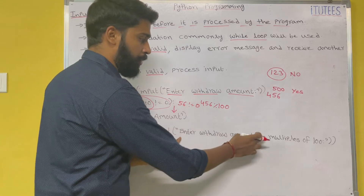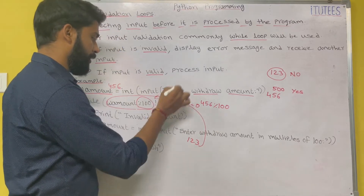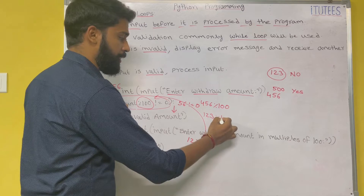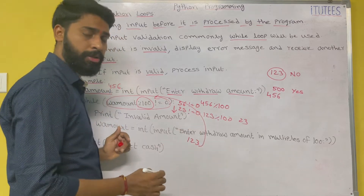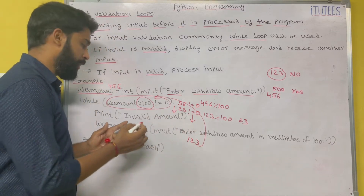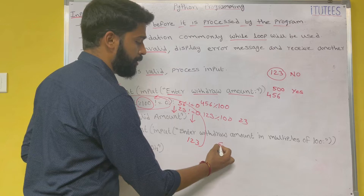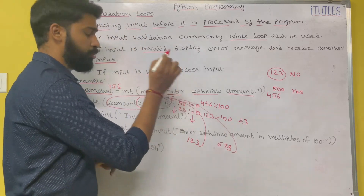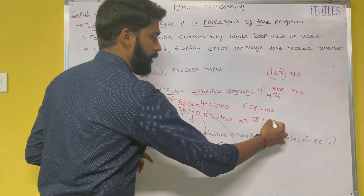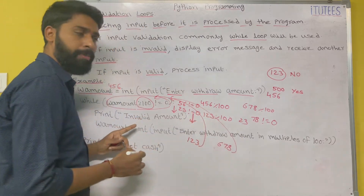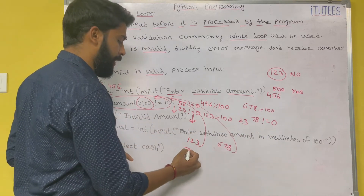Enter Withdraw Amount in multiples of 100. Again I enter 123 — the control goes to the condition: 123 percentage 100 is 23. 23 not equals to 0, so again it enters the block, prints Invalid amount, and asks again. Again I enter 678 — 678 percentage 100 equals 78. 78 not equals to 0, it is true, again enters the block: Invalid amount, and again asks Enter Withdraw Amount in multiples of 100.